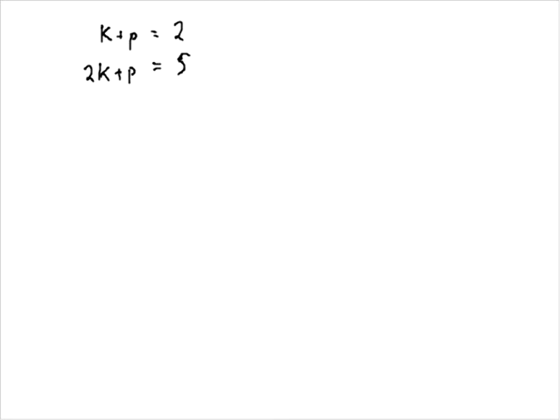And this is where we're going to use our math logic here. It's already pretty much solved if we just subtract these two. If we just subtract the second equation from the first equation, we're going to get something that solves for one of the variables. So k minus 2k is negative k. p minus p is 0. 2 minus 5 is negative 3. So we have a k value equal to 3.